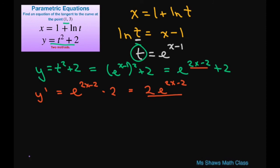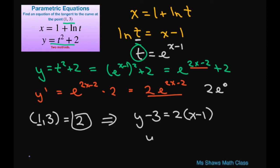Now, we're at the point (1,3). So when you substitute in your x here, this is just going to equal 2 because this is going to give you 2 times e to the power of 0. So there it is. And now we can write our equation as y minus 3 equals 2 times x minus 1. And that gives you y equals 2x plus 1 like we did for the first method.